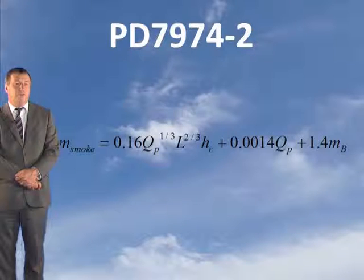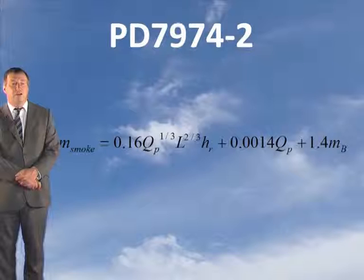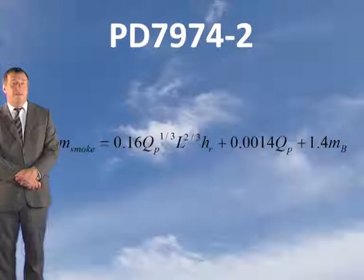If the plume is free and there is no entrainment into the plume sides, then the equation to use is shown here. It would be unusual if this model were to be used, because it is not often that there is no entrainment into the plume sides. It would only occur if the plume was bounded on each side by walls throughout its entire ascent.